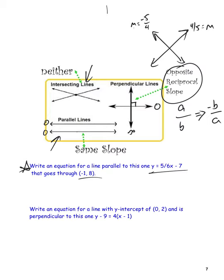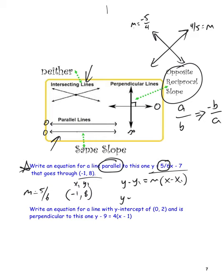Example: write an equation for a line parallel to one with slope 5/6 that passes through the point (-1, 8). Since it's parallel, the slope is the same: m = 5/6. We're given a point, so we use point-slope form: y - 8 = 5/6 · (x - (-1)), which gives y - 8 = 5/6(x + 1). You can leave it in point-slope form — you'd distribute 5/6 and add 8 to both sides to convert, but it's fine as is.